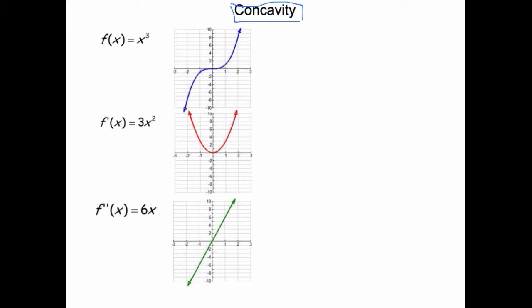We're going to see how the second derivative tells us about concavity. So the first thing you might notice is that for x cubed, we've got that it's increasing on the interval negative infinity to infinity. So f is increasing on the interval negative infinity to infinity.